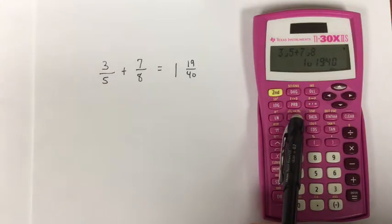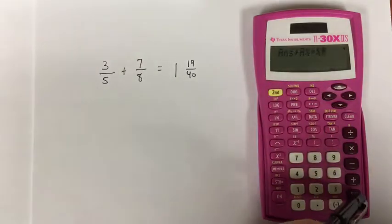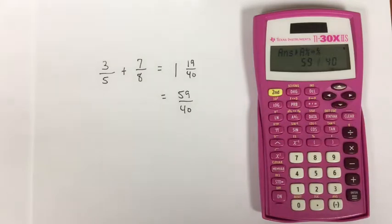The double arrow means we can convert either way. If I say second fraction button equals, it has now converted that mixed number to an improper fraction form.